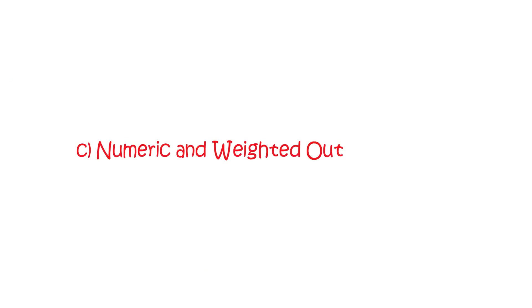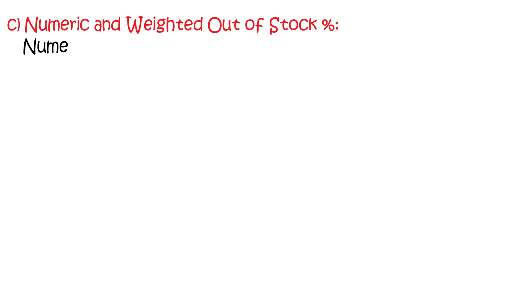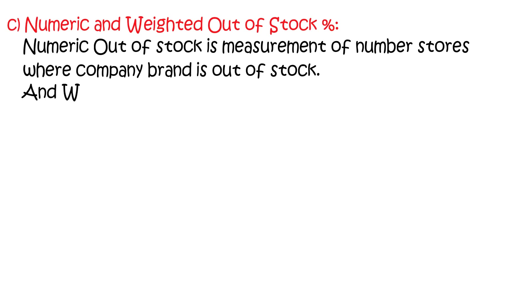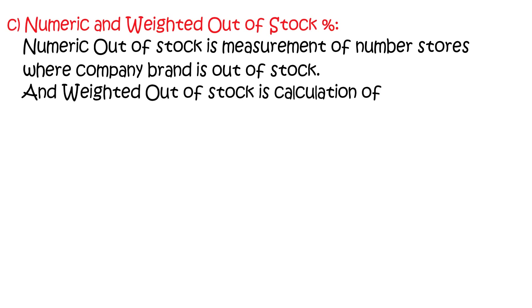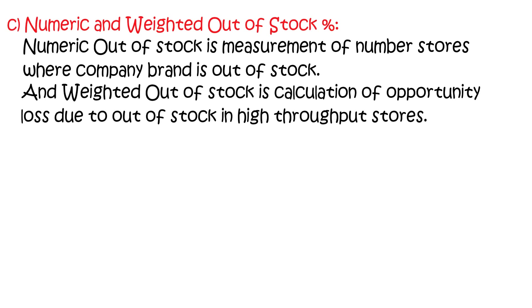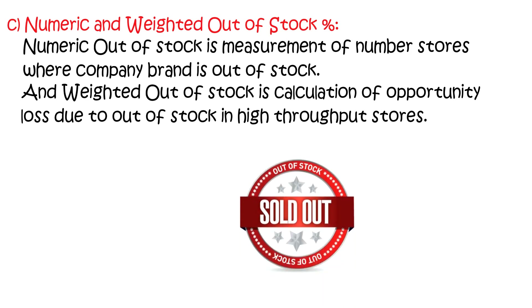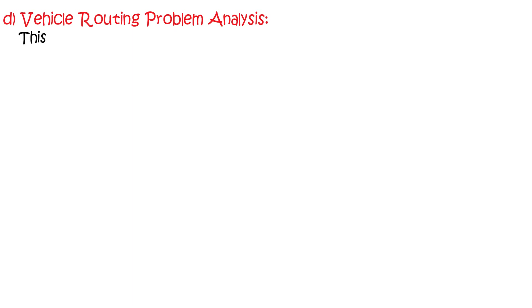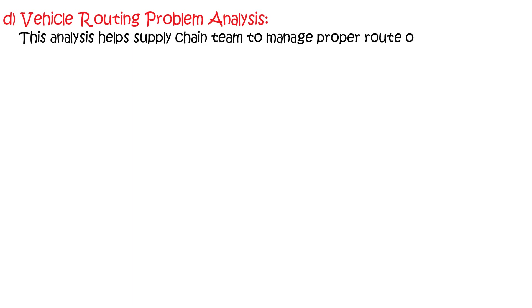Thirdly, numeric and weighted out-of-stock percentage. Numeric out-of-stock is a measurement of the number of stores where a company's brand is out of stock, and weighted out-of-stock is a calculation of opportunity loss due to out-of-stock in high throughput stores. Fourthly, vehicle routing problem analysis. This analysis helps the supply chain team to manage the proper route of vehicles so that delivery is at optimum time with less effort.